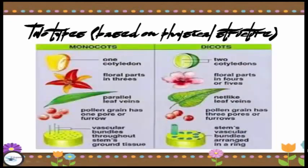As you can see in the summary, we compare monocotyledons and dicotyledons. Monocotyledons have one cotyledon while dicotyledons have two. Monocots have flowers in parts of three and parallel leaf veins, while dicots have flowers in parts of four or five and net-like leaf veins. Vascular bundles in monocots are scattered throughout the stem tissue, while in dicots they are arranged in a ring.